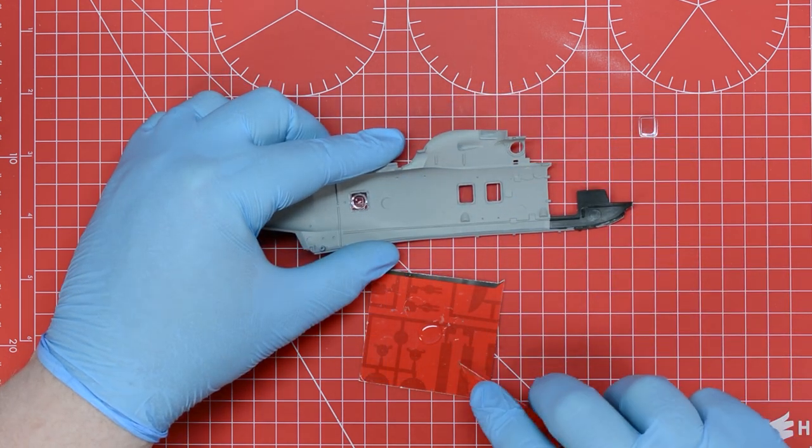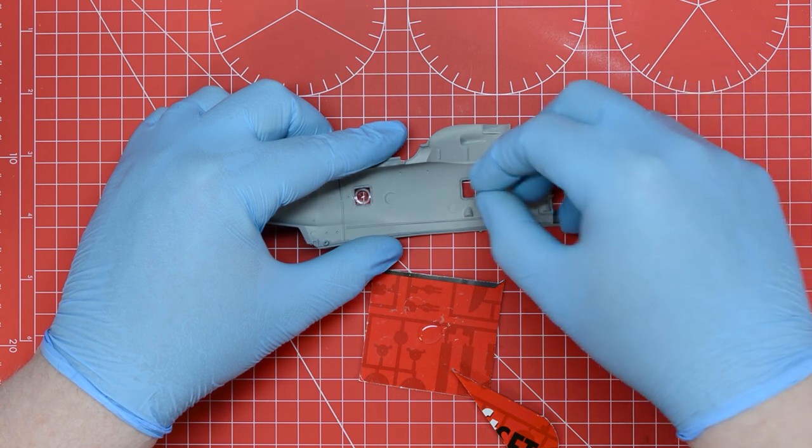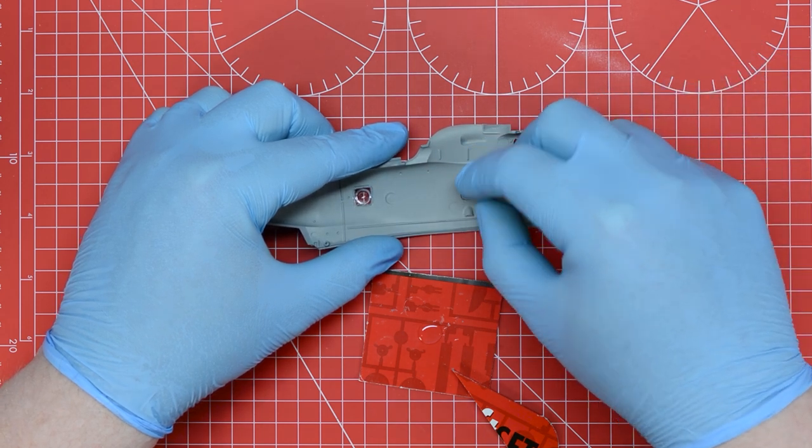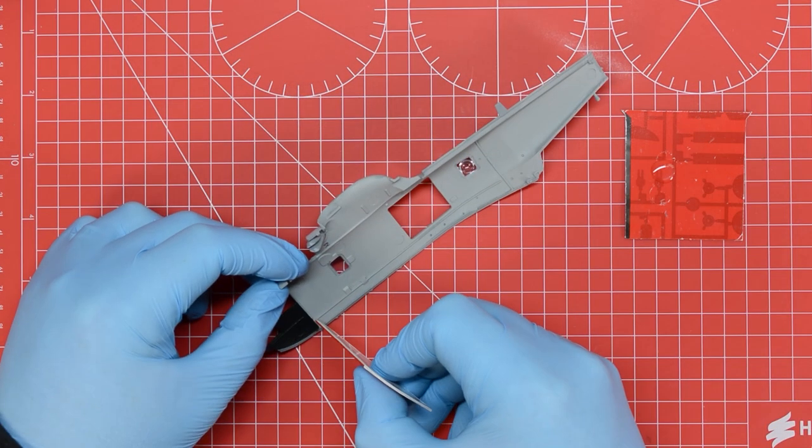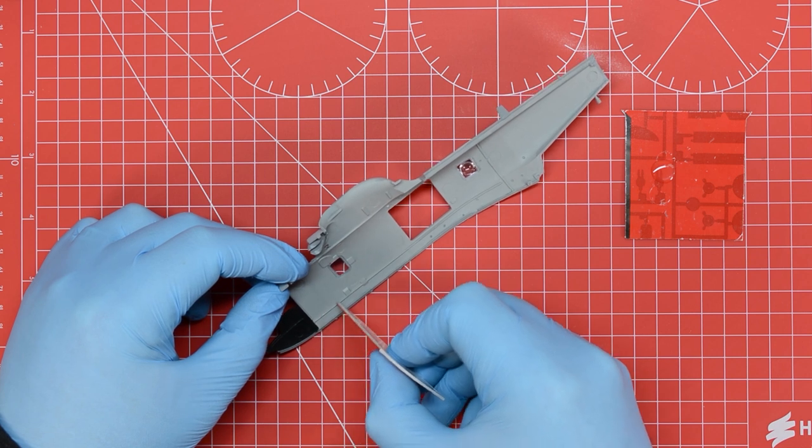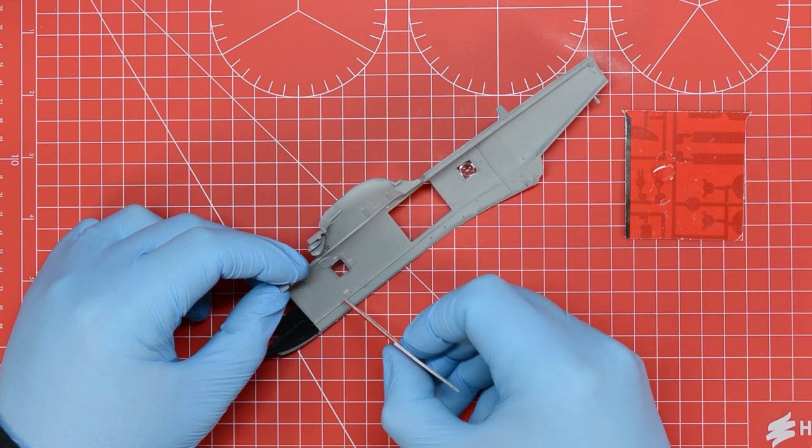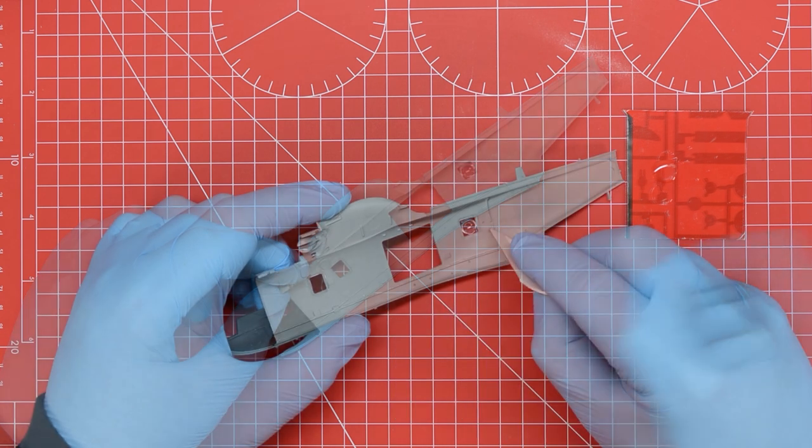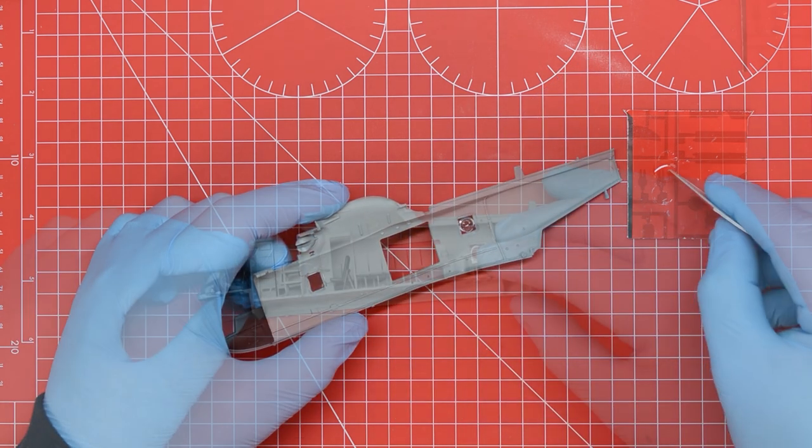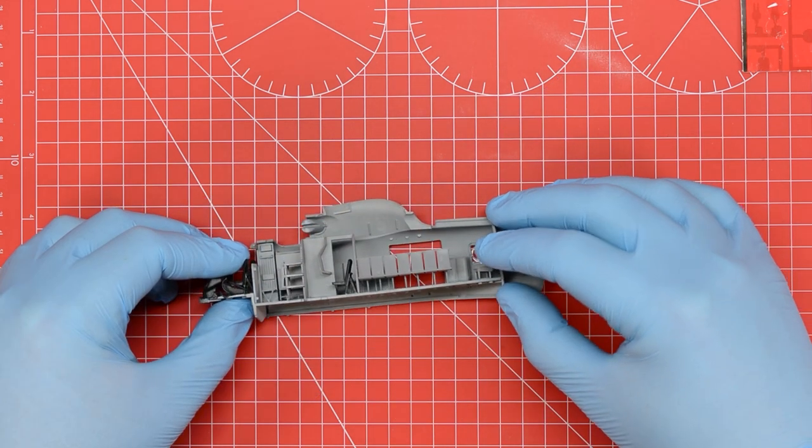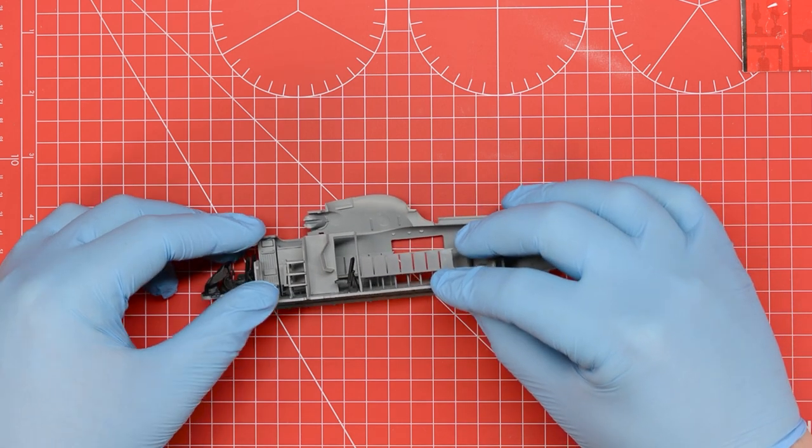We can then repeat the process for each of the windows in both sides of the fuselage and once the glue is completely dry we can move on and fit the interior assembly onto one of the two halves. After adding poly cement to the raised locating tabs for the assembly we can press it into position and hold it for a few seconds just for the glue to take effect.